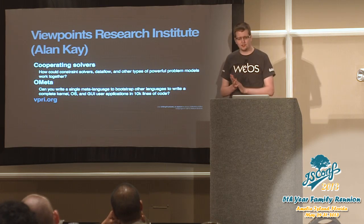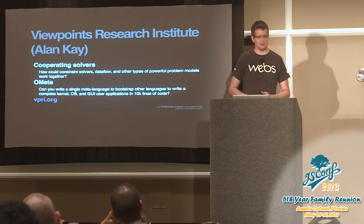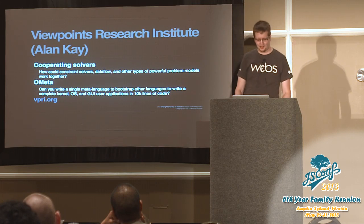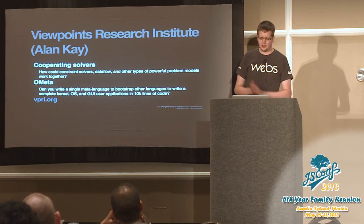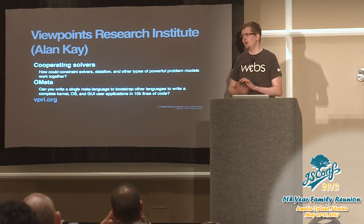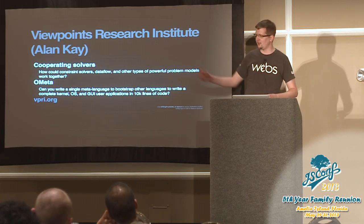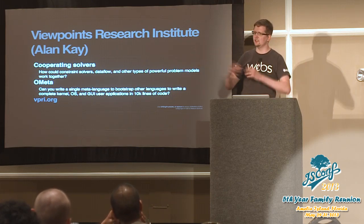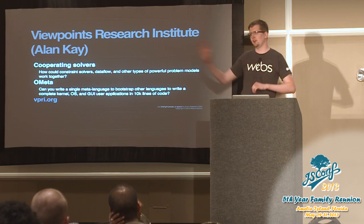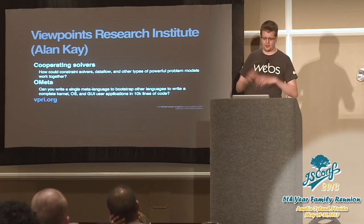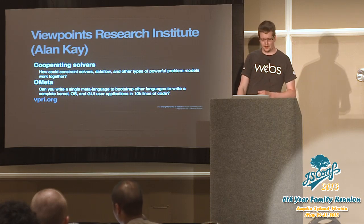The final thing I want to make a plug for is Alan Kay — only the inventor of object-oriented programming, the laptop, and the modern UI. He has a research institute called Viewpoints, and they're currently working on a research project called Cooperating Solvers, which is a way to take different kinds of solver engines — constraint solvers, data flow solvers, all these different kinds of engines — and ask how could they work together? What happens if you have a problem where part of it is constraints and part of it is data flow and part of it is something else? There are some really interesting PDFs and example code showing how to do that. Definitely worth looking into.